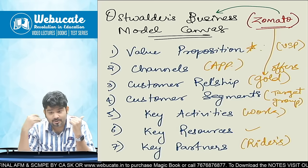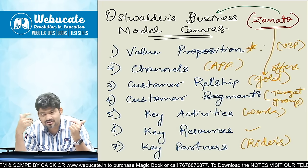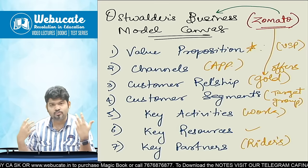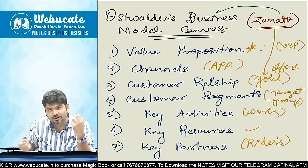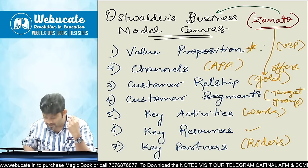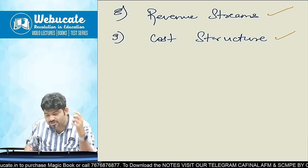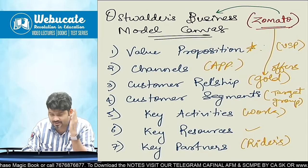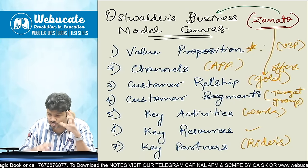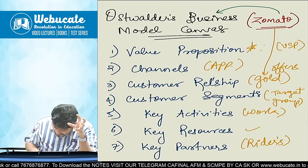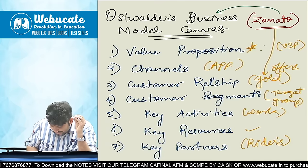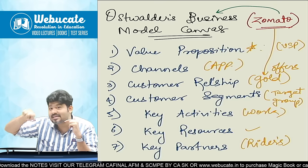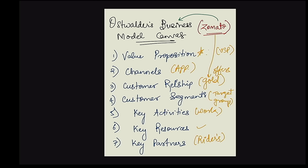Key partners mein aate hain your employees, the people who are working for you, your sales team, your riders — all of that. Key resources — jaise for example, mera key resource hai meri book. Then revenue streams kya hai, cost structure kya hai — that also you should know. Combine all of this together and take it forward. So aapka jo marketing aata hai, woh is the part of customer relationship and channels — customer relationship build karne ke liye jo marketing efforts aur ideas aate hain, all of that will fit there.